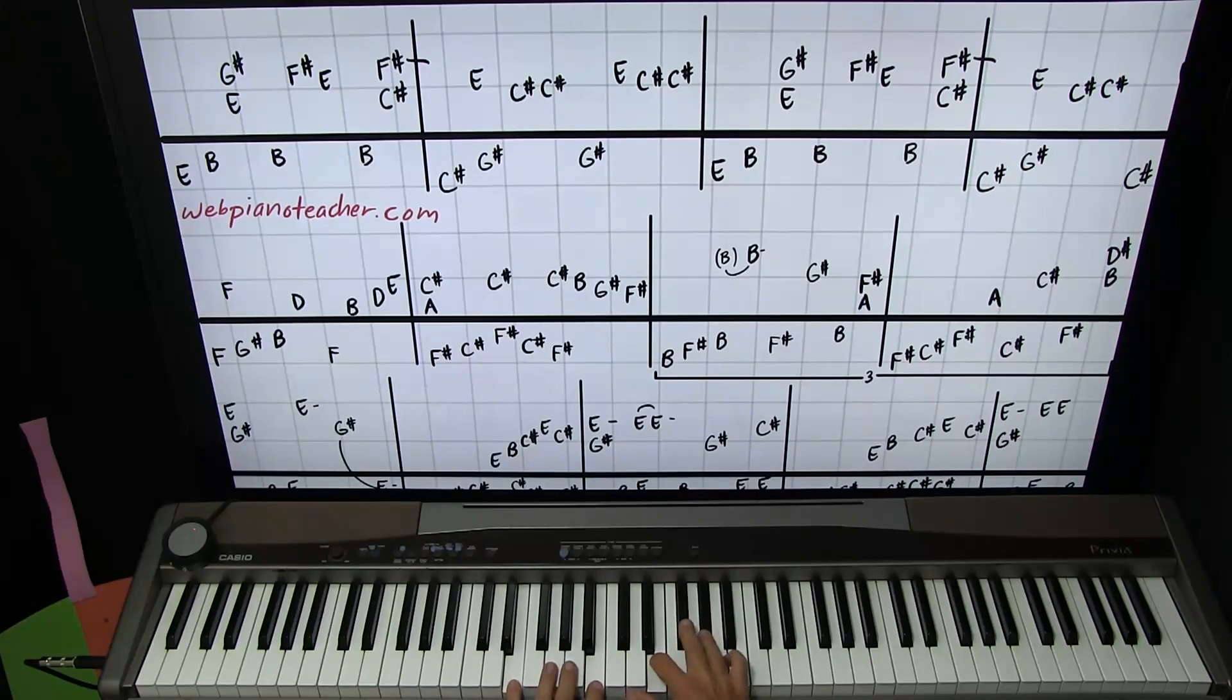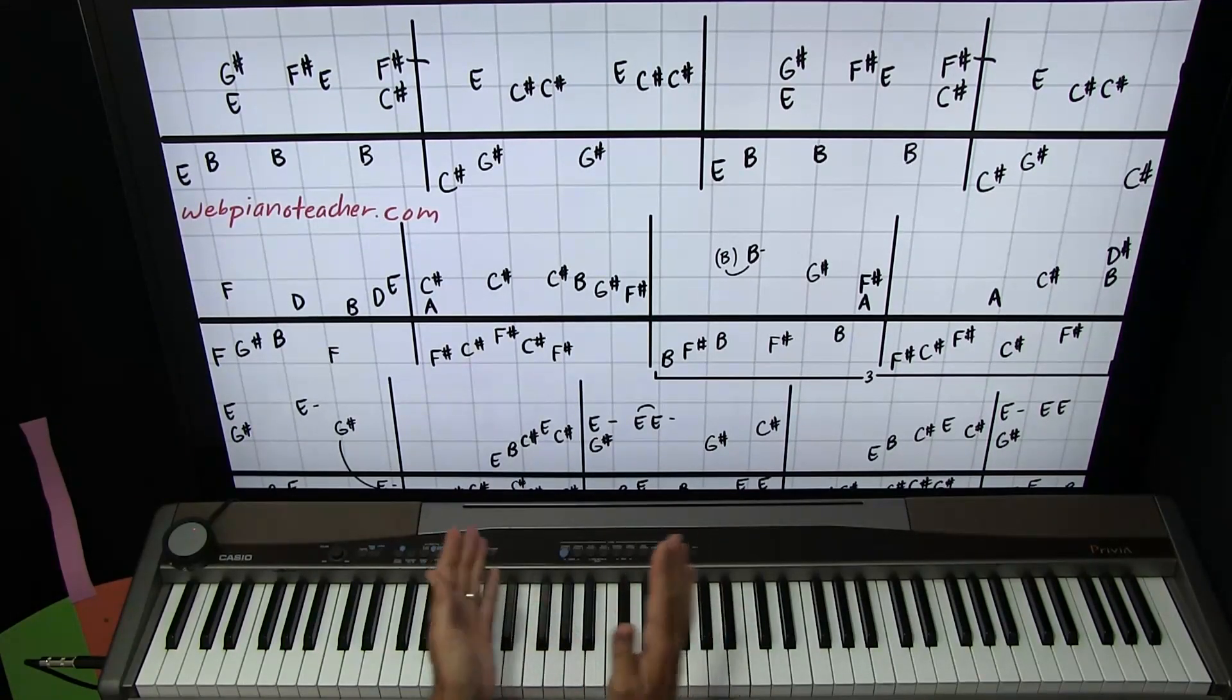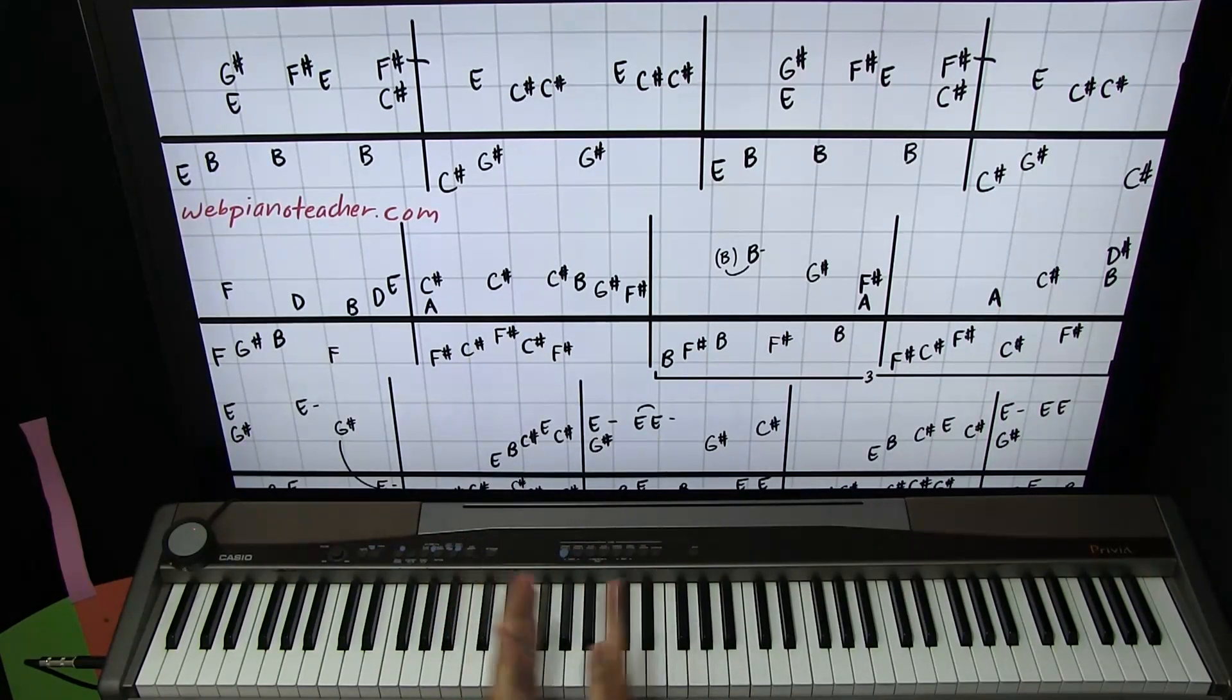So let's get started here. We're going to be in the key of E. The left hand will play an E up to a B on the left hand, right below middle C. So E, B, two more B's. The right hand will start with E and G sharp. I'll use, I don't know, one and three or two and four, and F sharp, E, and then C sharp and F sharp together. So it's left, left, right, left, right, right, right, left, right. So one hand or both hands are playing every eighth note.